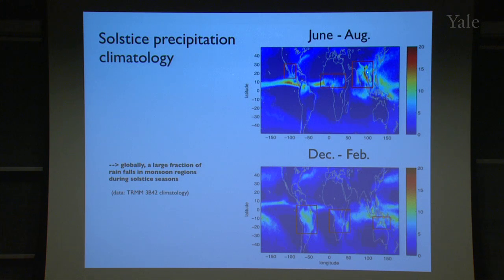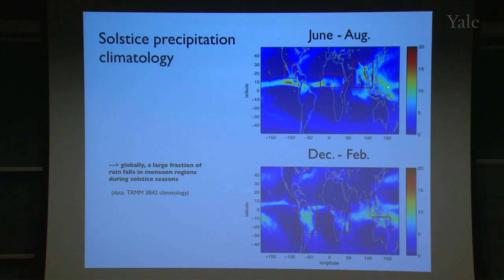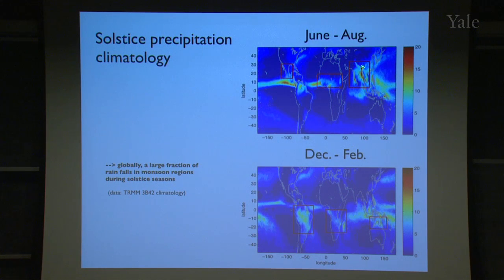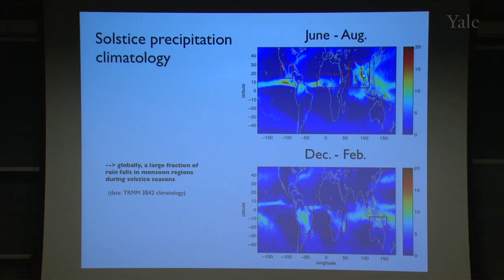I've drawn red boxes around what many people think of as the monsoon regions of the planet. The point is to show the migration of the rainy zones from one side of the equator to the other as you go from one solstice season to the other. The precipitation is highly concentrated in longitude in these monsoon regions, and the South Asian monsoon is stronger and located further poleward than any of the others.